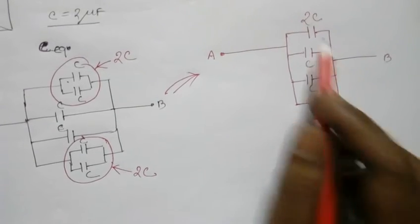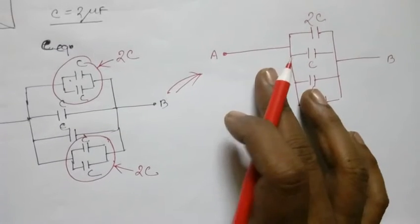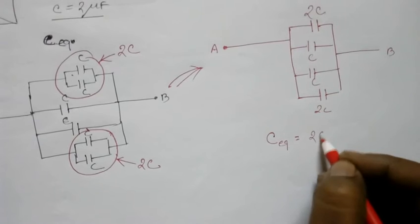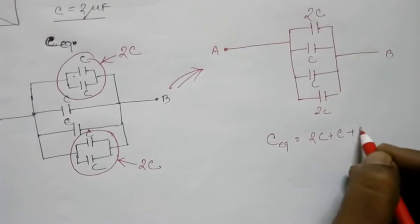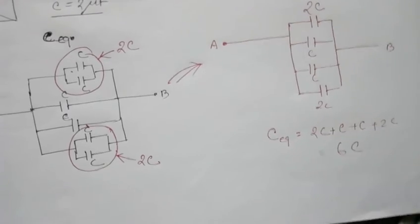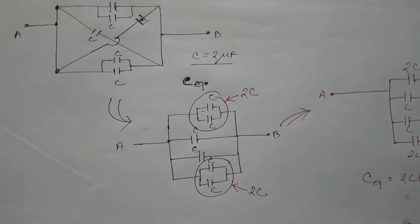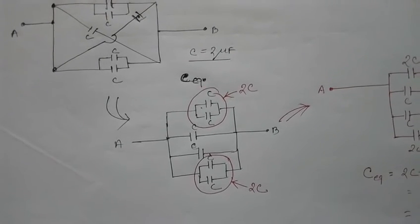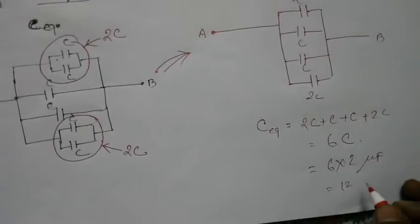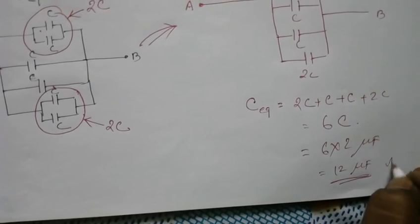Finally, you can get the answer. These four capacitors are all connected in parallel, so C equivalent equals 2C plus C plus C plus C plus 2C, which equals 6C. Since C is two microfarads, the answer is six times two microfarads, giving us twelve microfarads as the final answer.